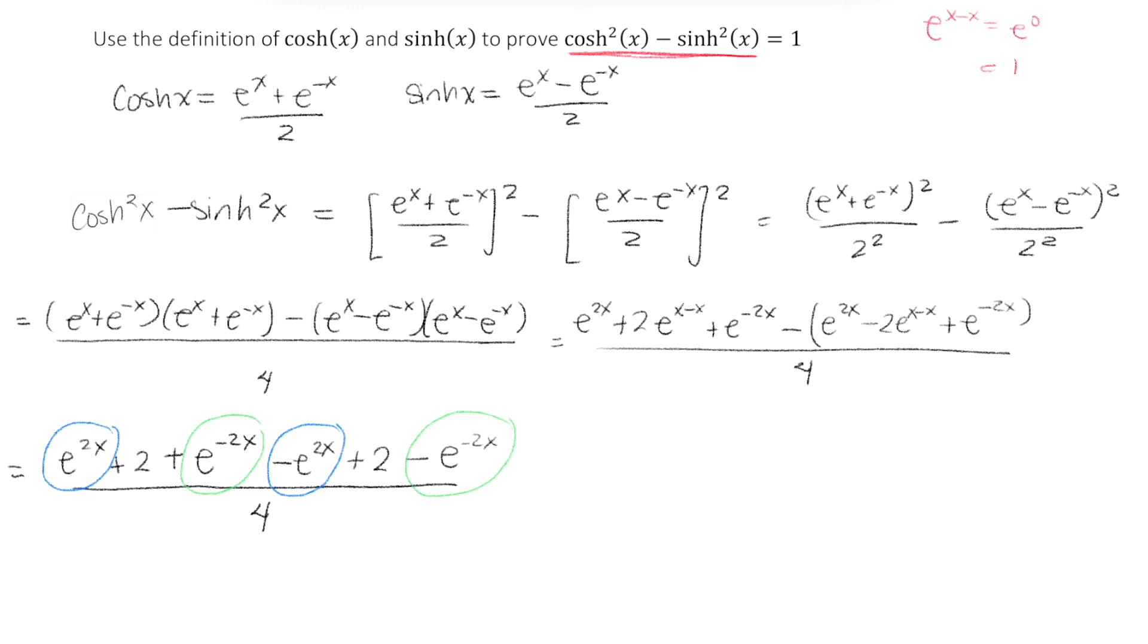So to recap, we have e to the 2x minus e to the 2x. Well, that's 0. And we also have e to the negative 2x minus e to the negative 2x. And that's also 0. So some things are going to vanish in this next step.